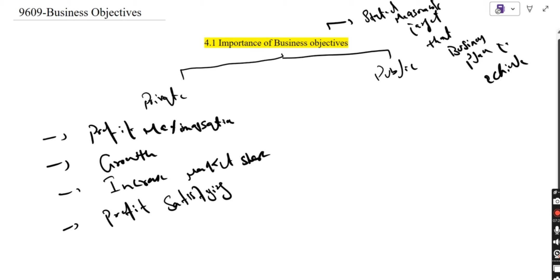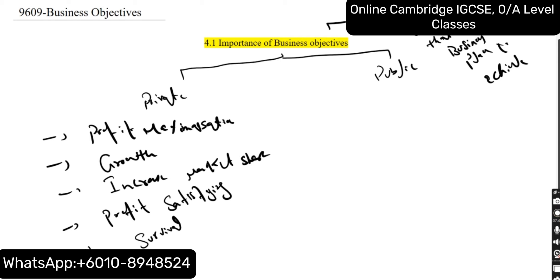The most important objective that should be at number one is survival. When you start your business, you are always looking to survive in the market. If you are not in a position to earn profit, at least you try your best not to go into loss — at least remain at the break-even point. Once you survive, ultimately you will get profit. The first step before earning profit is survival.